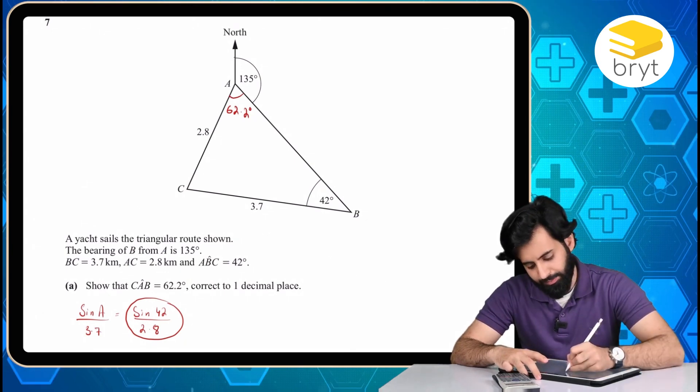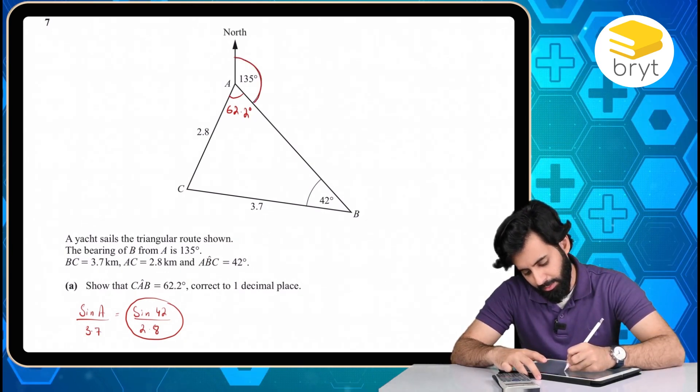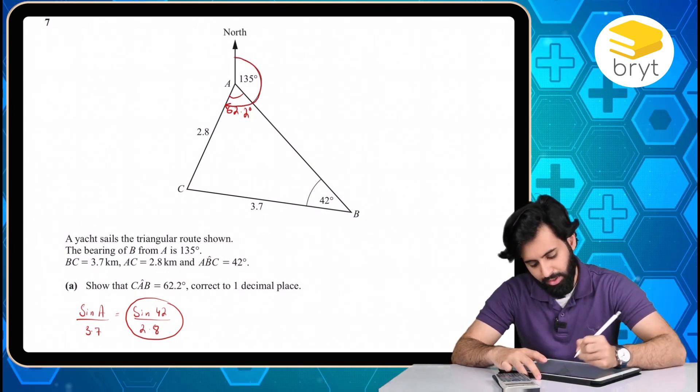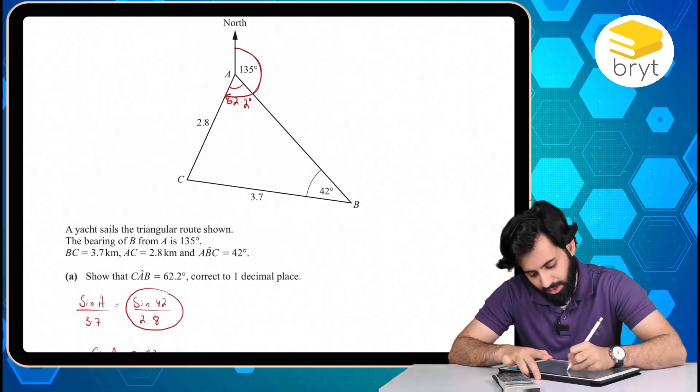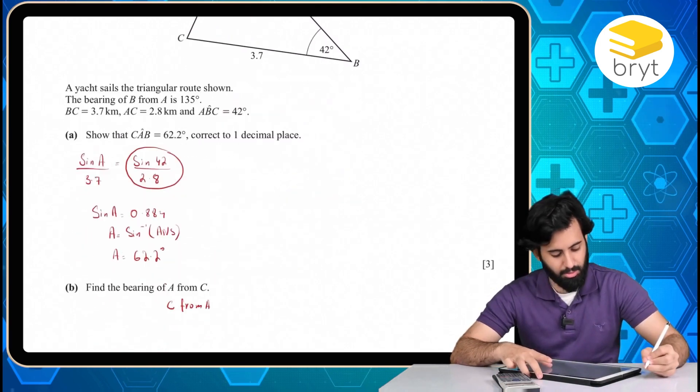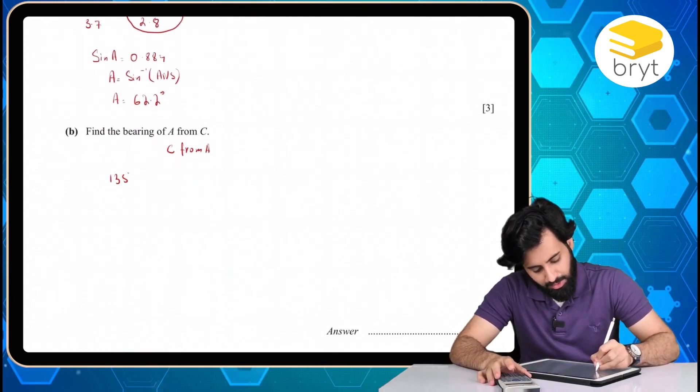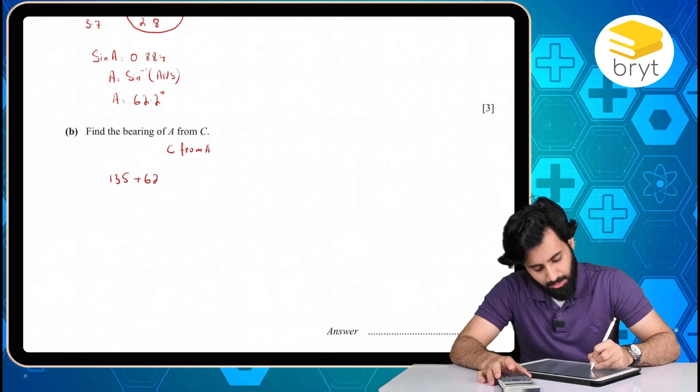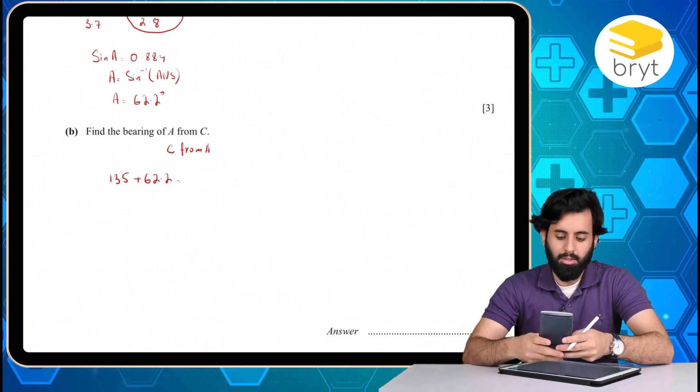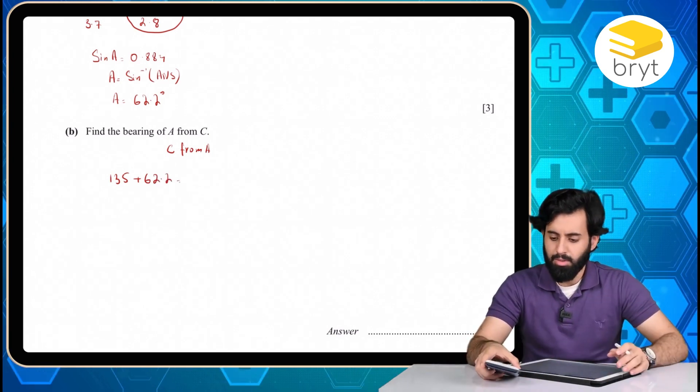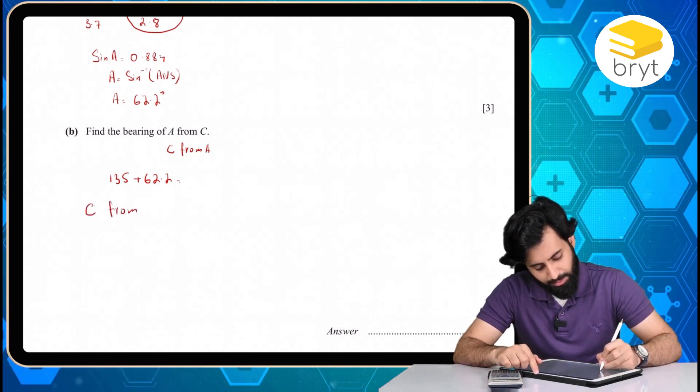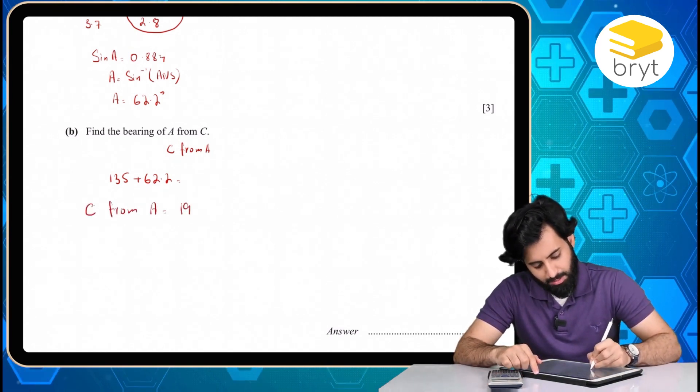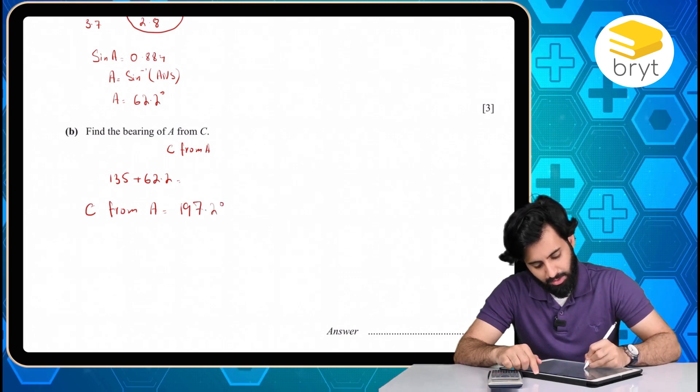So all I need to do is, that means I'm going to start from the north of A, and I'm going to keep on going until I reach the point that's connecting A and C. So that means 135 till here, and then another 62.2. So 135, let me just write it here, 135 plus 62.2 degrees. So 135 plus 62.2 gives me 197.2. So that means the bearing of C from A is basically equal to 197.2 degrees.